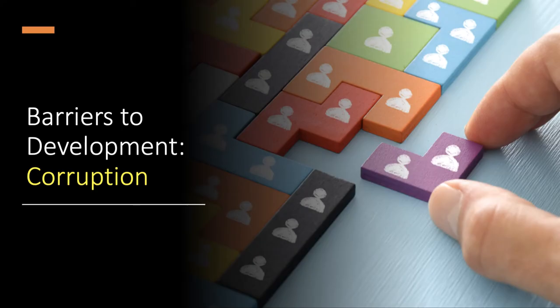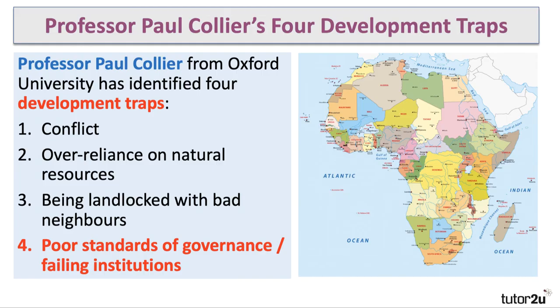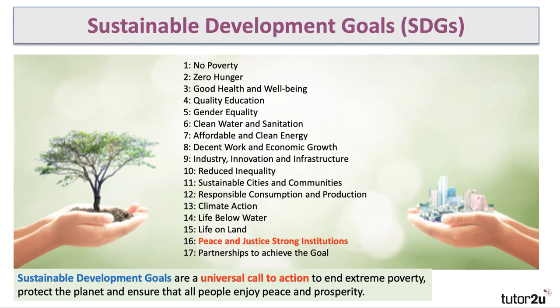So we've looked at property rights. In the second part of this video, I want to look at corruption. In our development economics lesson we were thinking about barriers to development, and the absence of property rights is crucial — and so too is corruption. Professor Paul Collier from Oxford University has talked about barriers to development and identified what he calls four development traps, one of which is poor standards of governance and failing institutions. Sustainable Development Goal 16 — peace, justice and strong institutions — is crucial to reducing extreme poverty.